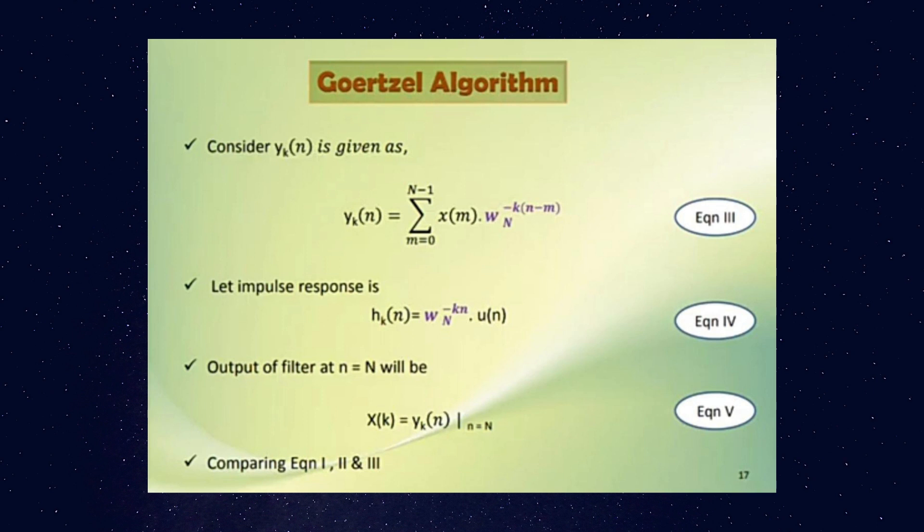And the impulse response is hₖ(n) equals ωₙ⁻ᵏⁿ into u(n). Here u(n) is the discrete time representation of a step response.